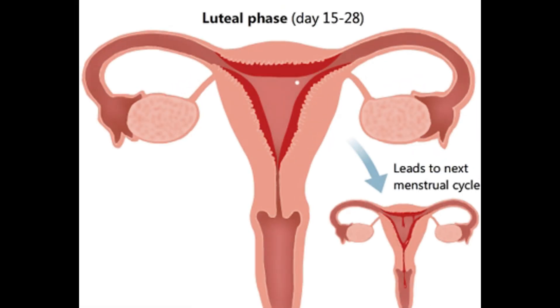The Luteal Phase runs from Day 15 to 28. The ruptured follicle transforms into the corpus luteum, which secretes progesterone. Progesterone maintains the uterine lining, preparing it for possible implantation.